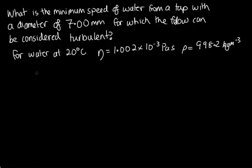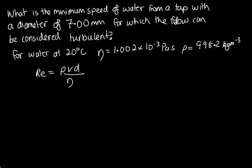To answer this, we're going to need to use Reynolds number. Reynolds number is given by the density times the velocity times the diameter over the viscosity. We know that for turbulent flow we need a Reynolds number of 4,000 or above. What we're trying to find is the velocity, so let's rearrange this equation to make the velocity the subject.